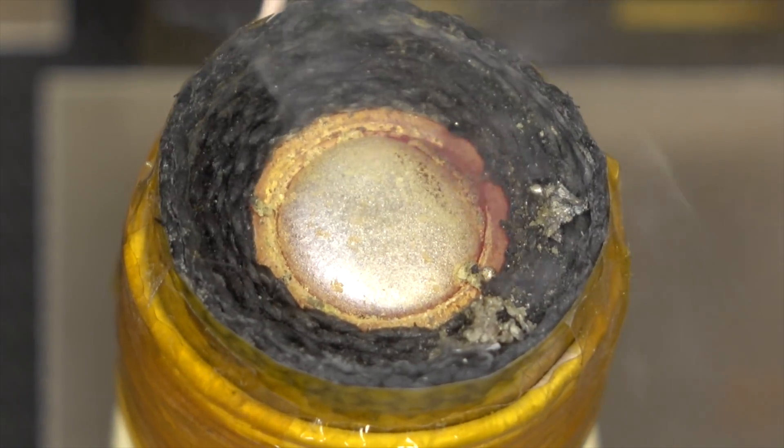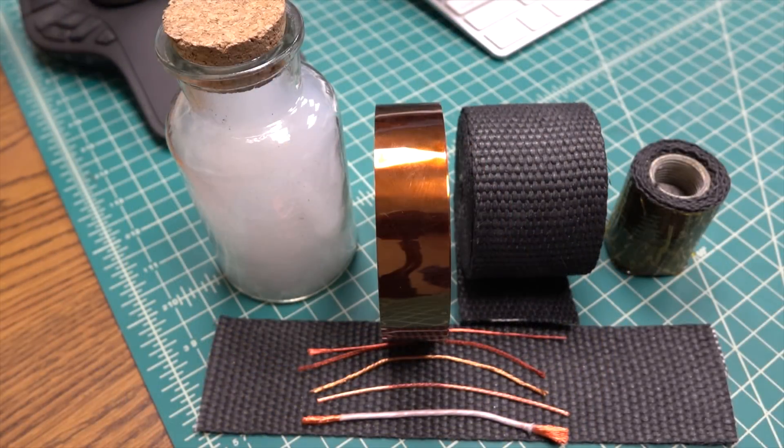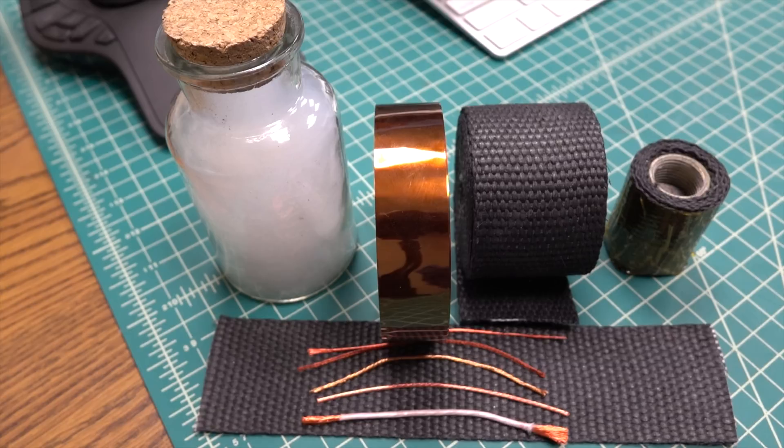Now you might be wondering why am I making a solder pot when I could just go buy one. Well, I already have a large solder pot but the problem is every time I want to use it I need to wait like 20 to 30 minutes for it to heat up. I wanted a small solder pot for quick jobs that could heat up in less than 30 seconds.